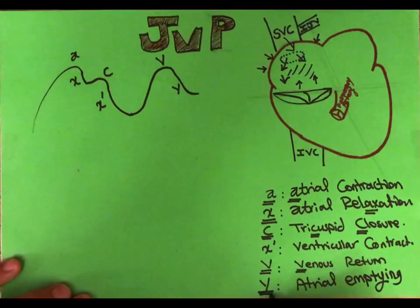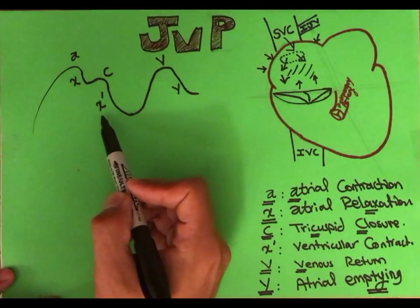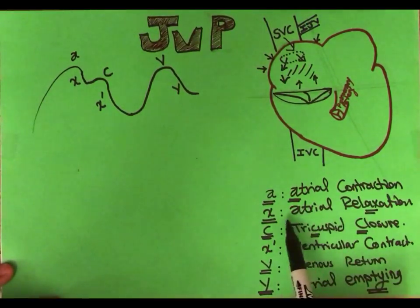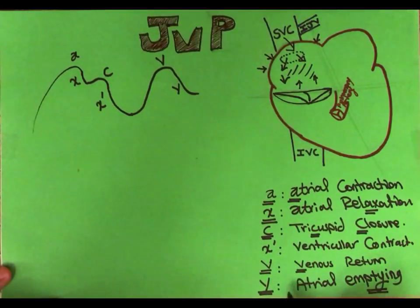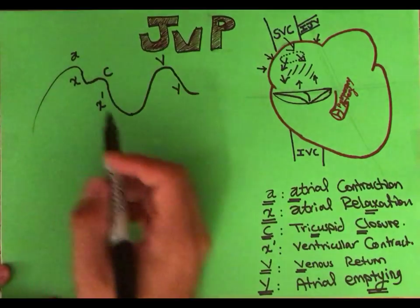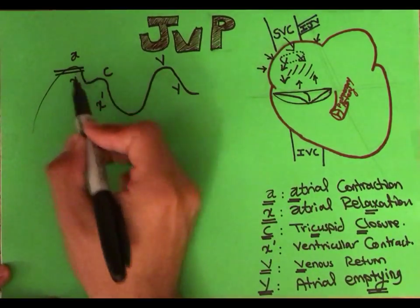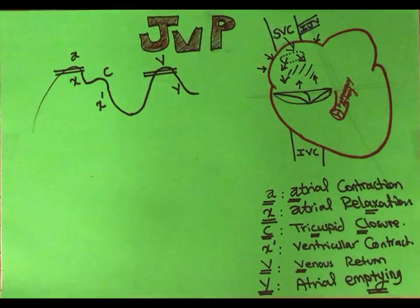To summarize, there are six waves: A, X, C, X prime, V, and Y — standing for atrial contraction, atrial relaxation, tricuspid closure, ventricular contraction, venous return, and atrial emptying respectively. In clinical examination, the two waves that can actually be seen are the A wave and the V wave.